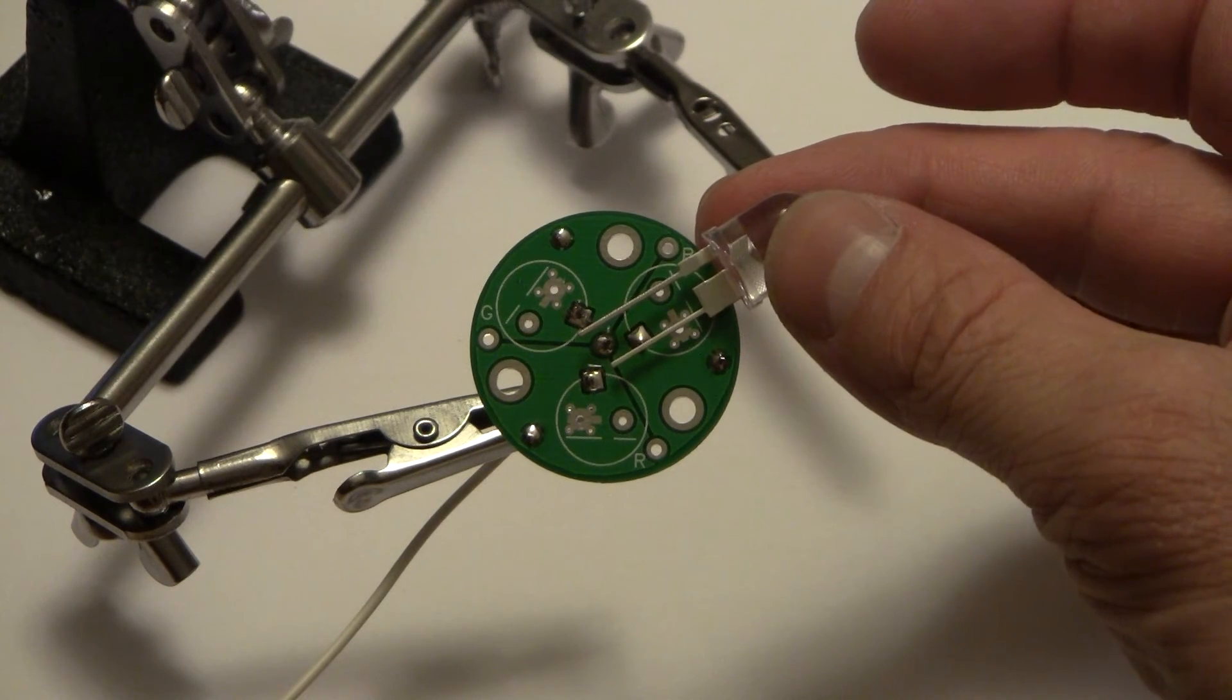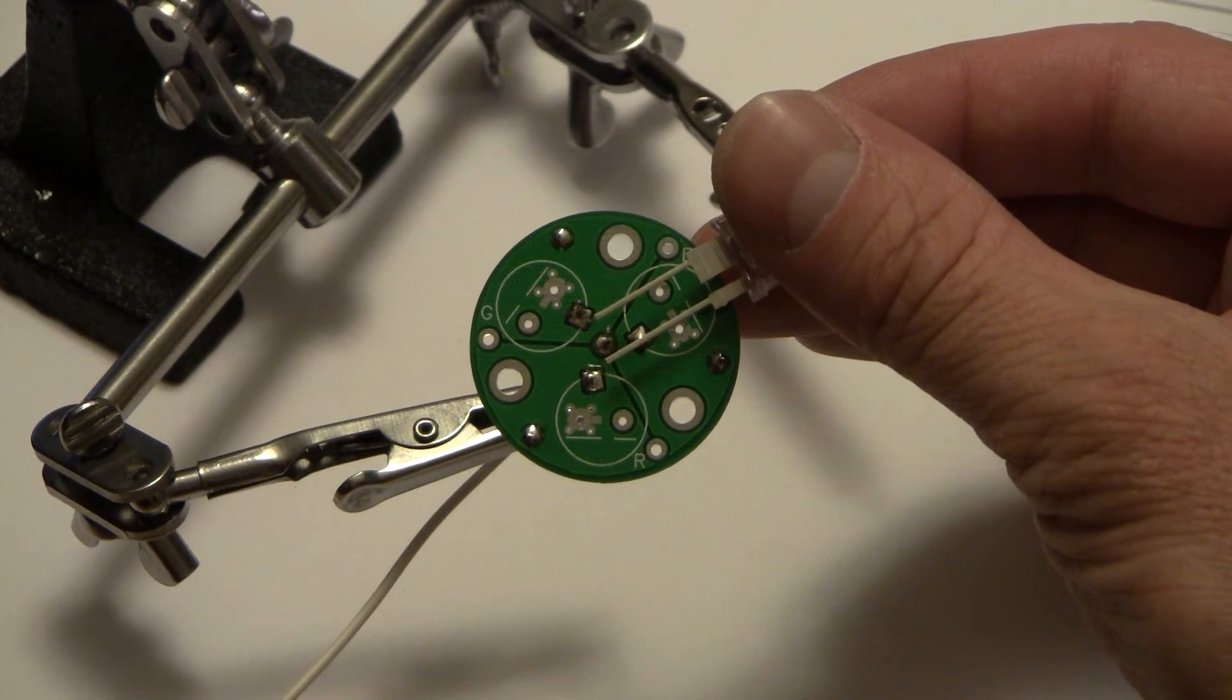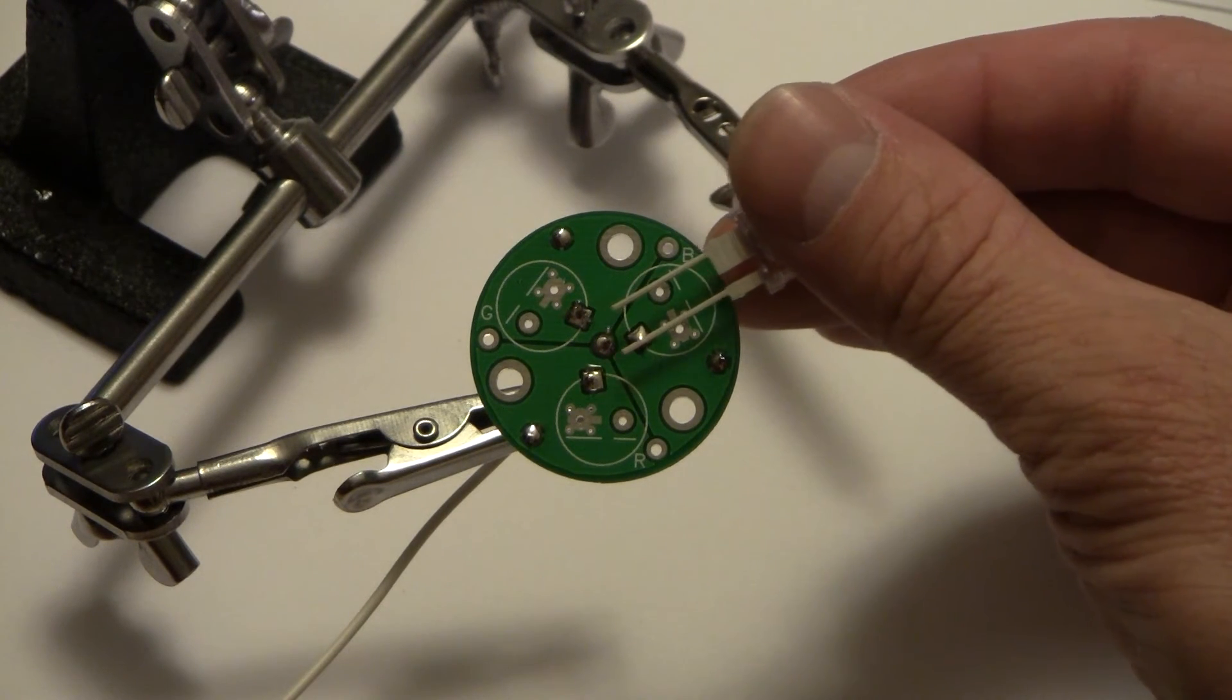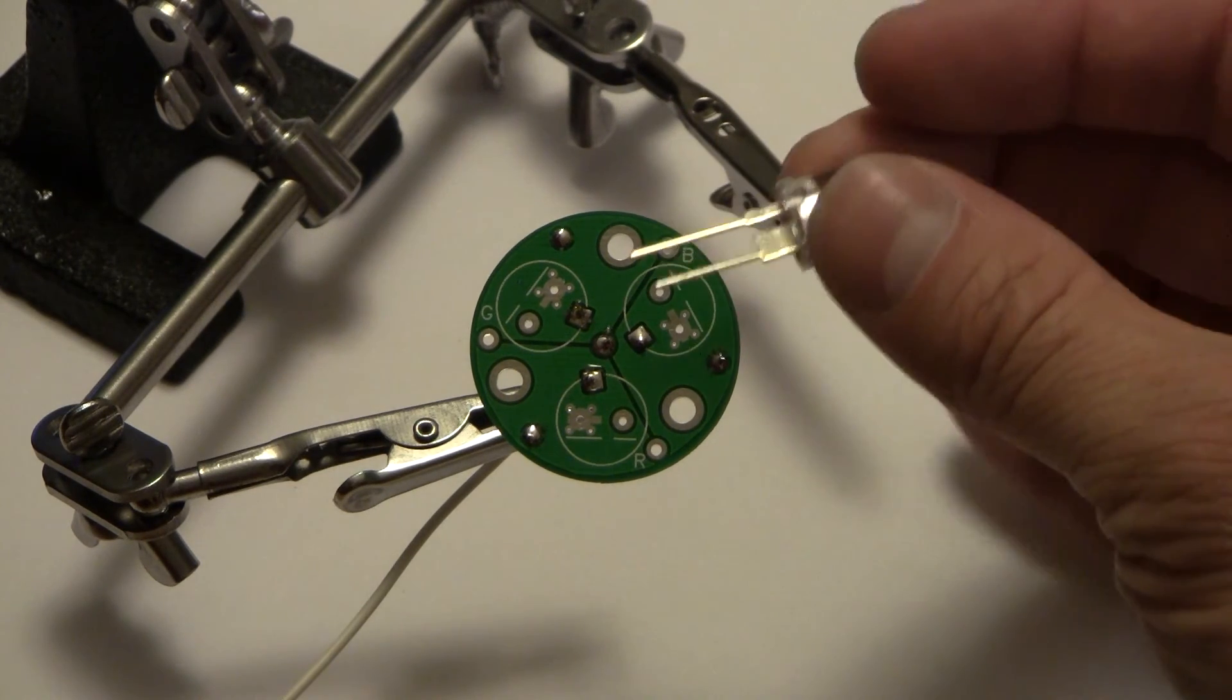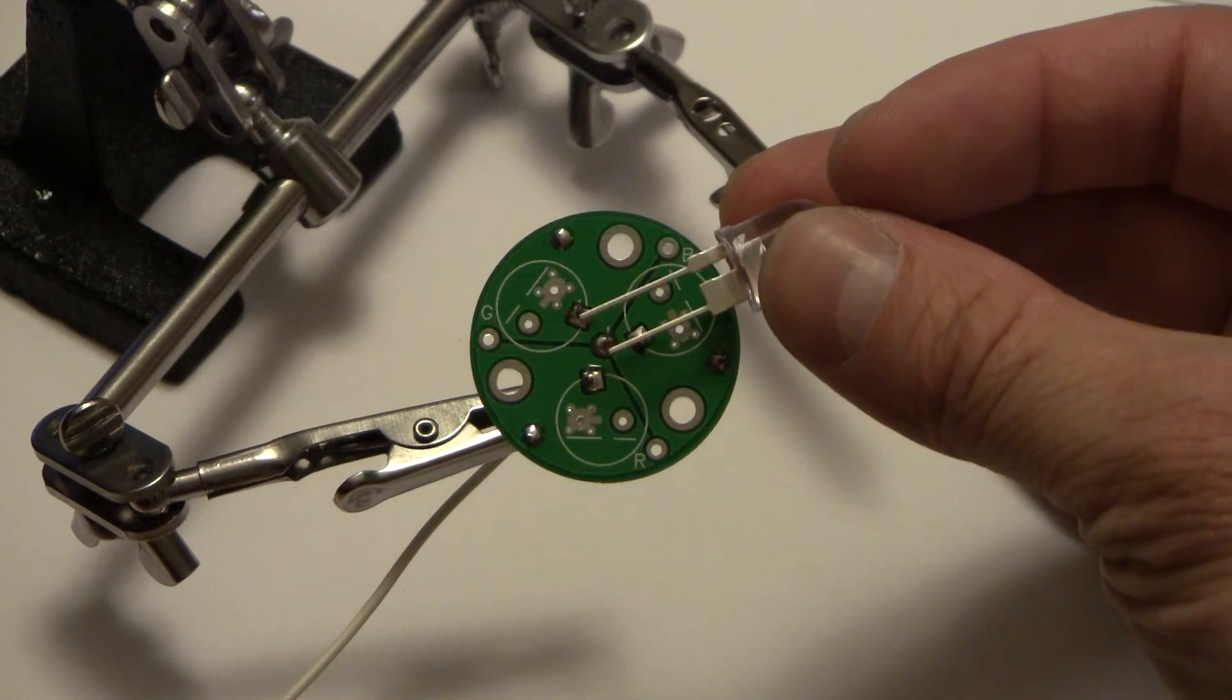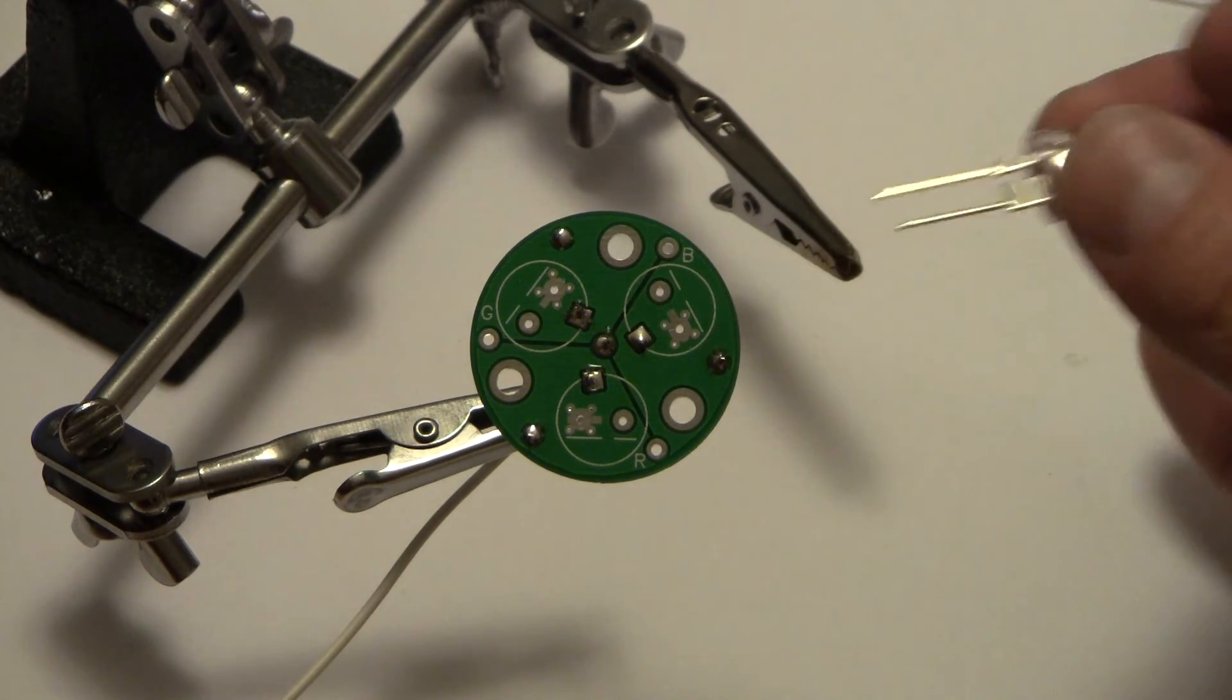So this is the right orientation, this is the wrong orientation. You see the wider lead on the LED is next to the short line, that's not the way we need it. We need the wider lead of the LED next to the longer line, that's that line right there.